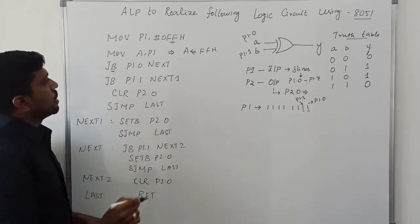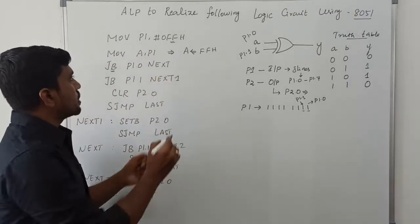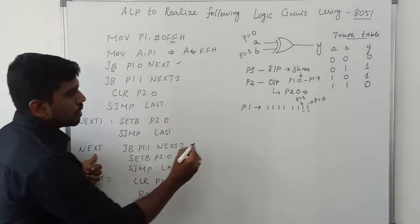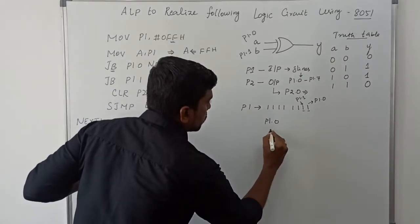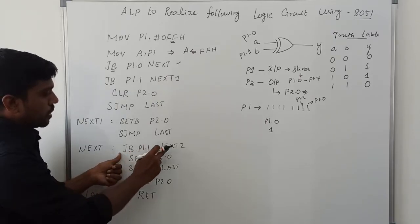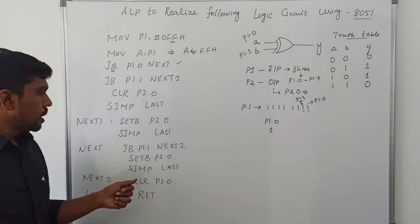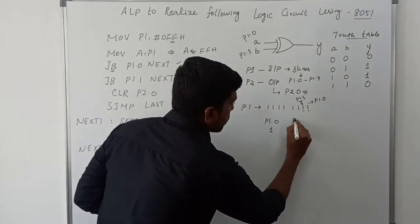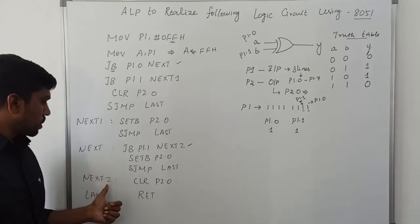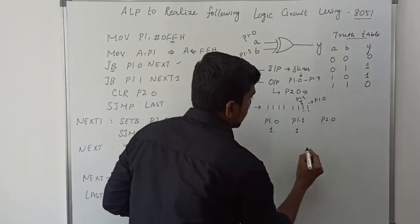The instruction JB P1.0 NEXT means jump on bit — if P1.0 is set to 1, the condition is true and it jumps to the label NEXT. Then JB P1.1 NEXT2 checks P1.1. If P1.1 is also set to 1, this condition is also true and it jumps to NEXT2.